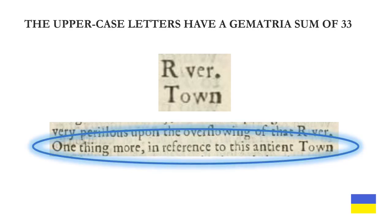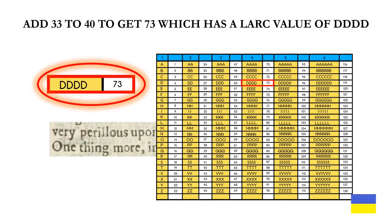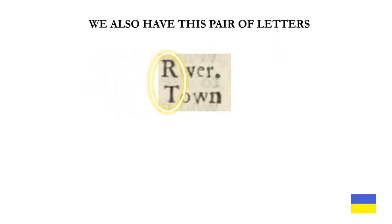The rest of the sentence or line has 40 letters — is this another 1740 allusion? This sentence, the line below it, has 40 letters in total. The uppercase letters in it have a gematria sum of 33. Add 33 to 40 to get 73, which has a Latin alphabet repeated count value of D-D-D-D. We also have this pair of letters, the uppercase R and T.